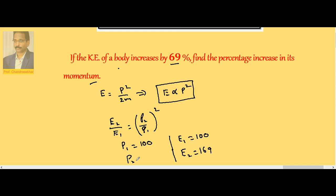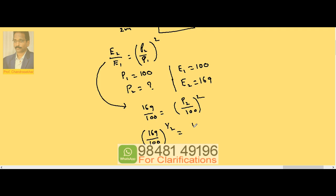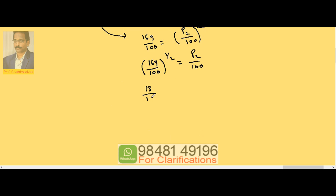Substitute these values into this equation: 169 by 100 equals p2 by 100 whole square. Remove square from this side, so it becomes square root p2 by 100. 169 under root is 13, so 13 by 10 equals p2 by 100. You can cancel zeros; therefore p2 is 130. So what is the change? Change equals p2 minus p1, which is 30.